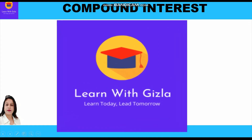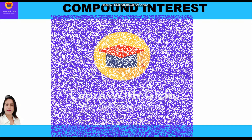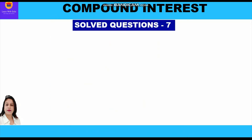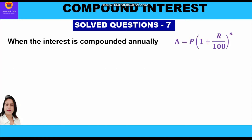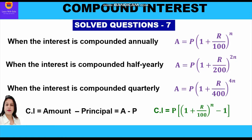Hello dear students, welcome to YouTube channel Learn with Gizla. Up till now in previous videos we have been solving questions using the unitary method. Now in this video we shall use the formula method to solve questions when interest is compounded annually, half yearly, and quarterly. First of all let us revise the formulas which we are going to use for solving these questions.